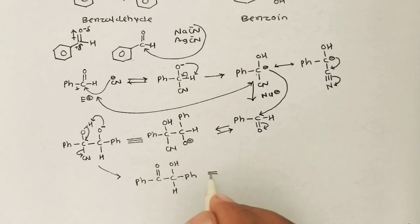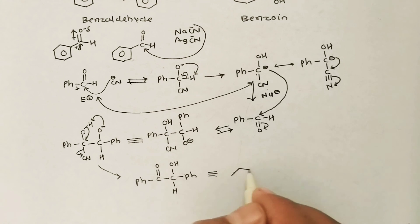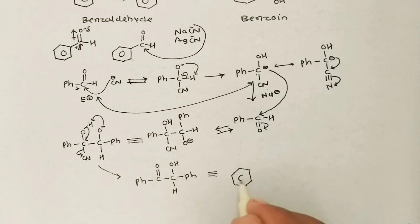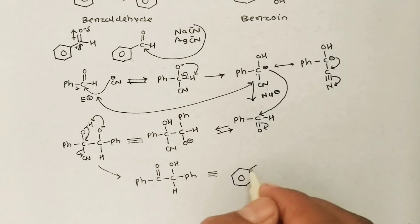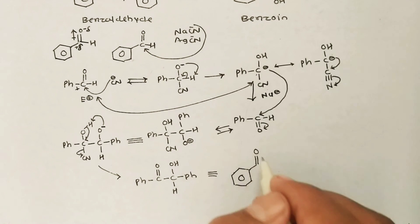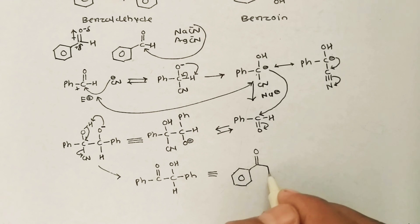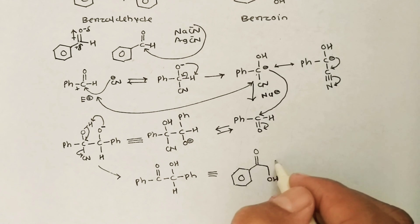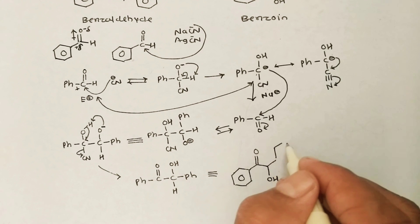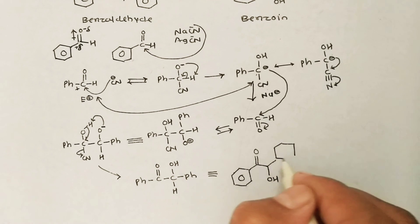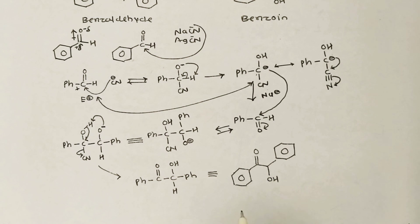I can draw this as Ph–C(=O)–C(OH)–Ph, which is nothing but benzoin.